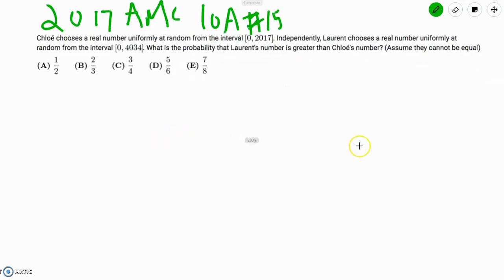So we see that we have infinite possibilities here. Chloe can choose any number from the interval 0-2017. It doesn't have to be an integer, it can be rational, it can be irrational, it can be whatever. And then Laurent does the same thing from a larger interval. And we want to find the probability that Laurent's number is greater than Chloe's number.